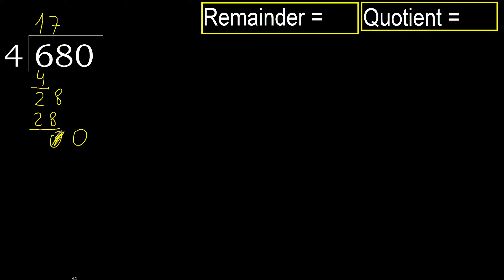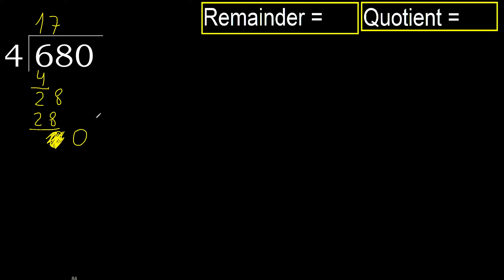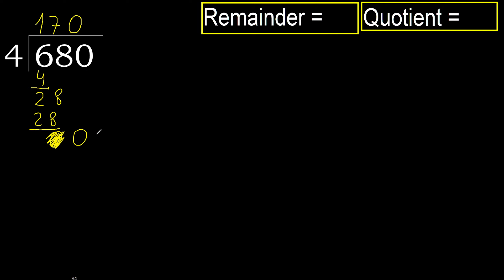Eliminate 0 on this side. 0, but 0 is less, therefore next there is no number, therefore finished. Complete — always complete with 0, because here finished with this number.